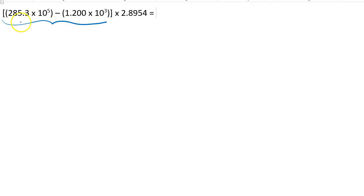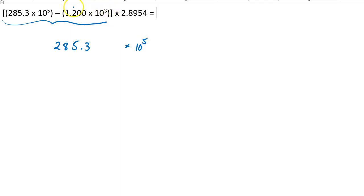So let's follow the rule for subtraction — this is where we're paying attention to decimal places — but both of our numbers have to have the same exponent. So this is 10 to the 5th, this is 10 to the 3rd. We want those to have the same exponent, and convert to the higher power. So I'm going to rewrite this number, and then I'm going to convert it to 10 to the 5th. To go from 10 to the 3rd to 10 to the 5th means I've multiplied by 100, so I better divide this part of the number by 100. So I'm subtracting 0.01200.